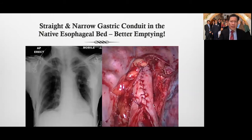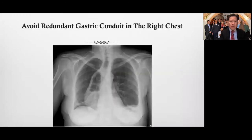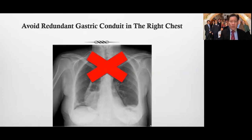In your surgery, you can do things to help yourself and your enhanced recovery. In esophagectomy, we try to create a straight and narrow gastric conduit and place the conduit back in the native esophageal bed as best as possible — this creates better emptying. What you don't want is a redundant gastric conduit in the right chest with a fluid level, where things are not moving through and you have delayed gastric emptying.